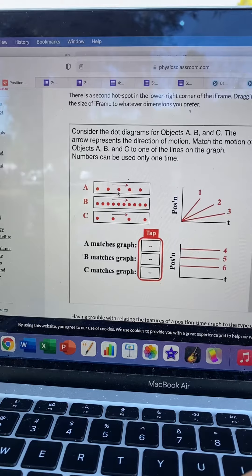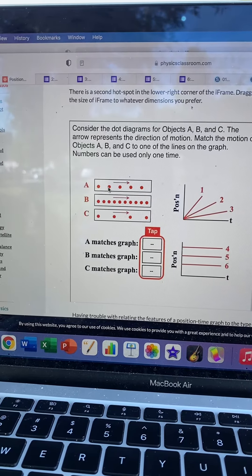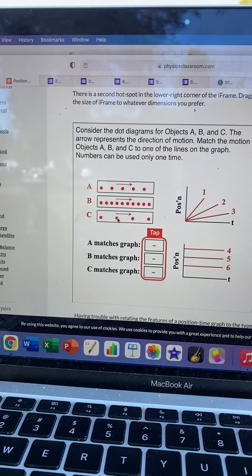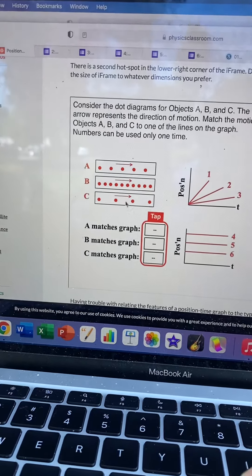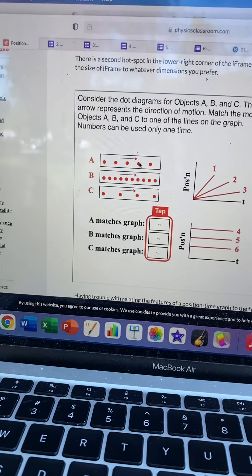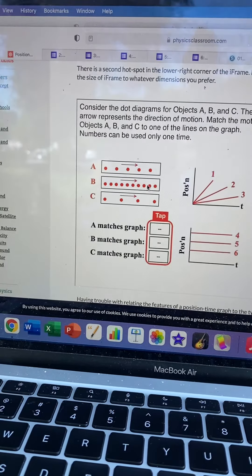And so we want to say A, which looks like this, right? So these are kind of medium spaced, these are closely spaced, and these are far. So which one would be the fastest? C would be the fastest, A would be the medium, and B would be the slowest because they're closest together. So we want to find stuff that matches that.